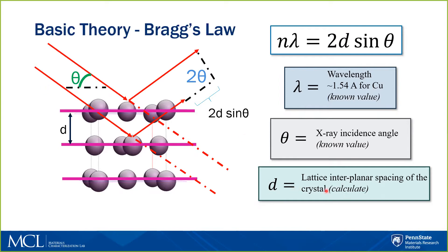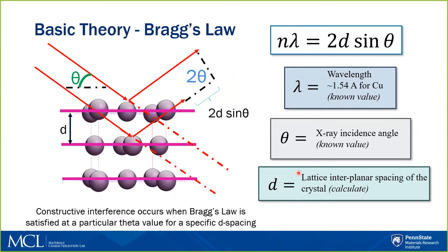Theta represents the angle that the incident X-ray beam makes with the surface of the sample. D is what we call the lattice interplanar spacing, shown here. We commonly just call this the d-value, and it represents the distance between planes of atoms in a crystal structure that are situated parallel to the surface of the sample.